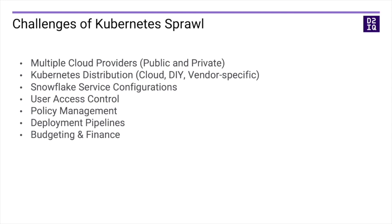You're going to have multiple Kubernetes distributions. Each cloud vendor will have a Kubernetes distribution tailored to their environment. If you do it yourself, you're going to pick your Kubernetes version. And if you go with a vendor-specific version, you might actually have forked code from the pure open-source Kubernetes. You can also have Snowflake service configurations — small deviations from your standard configuration due to the uniqueness of each deployment.